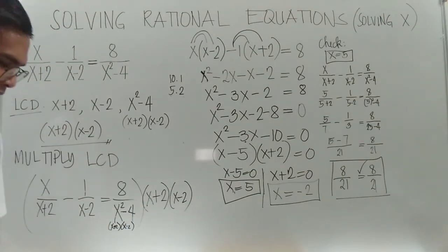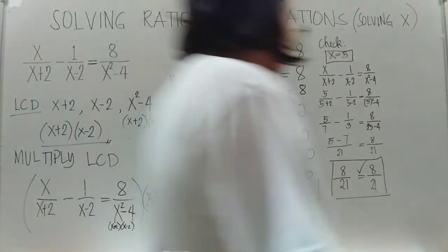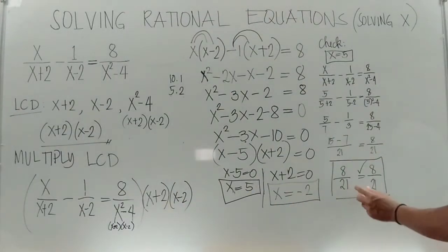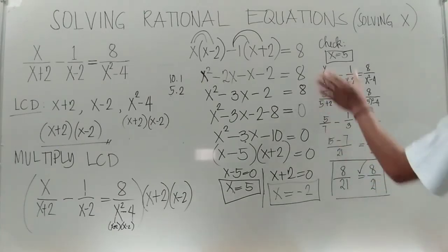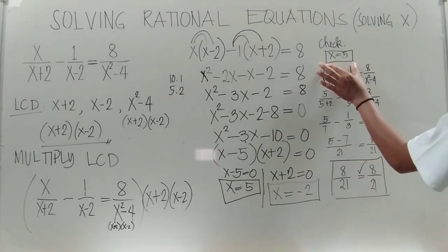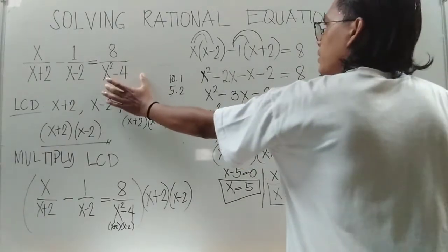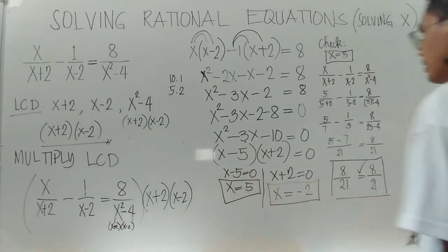So 8 over 21 equals 8 over 21 — this is true. Therefore, x equal to 5 is a solution of the given rational equation.